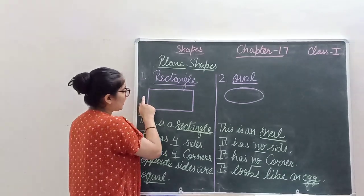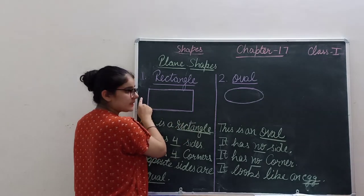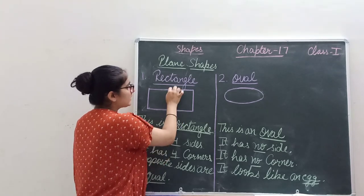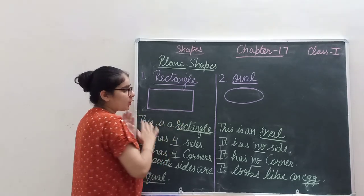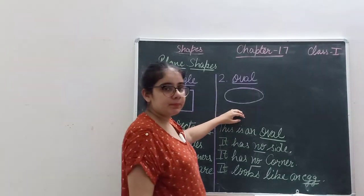Opposite sides are one, this one, one, two. These are opposite sides. These two sides are equal. These are also opposite sides. These sides are equal. So opposite sides of rectangle are equal. Now come to second shape.